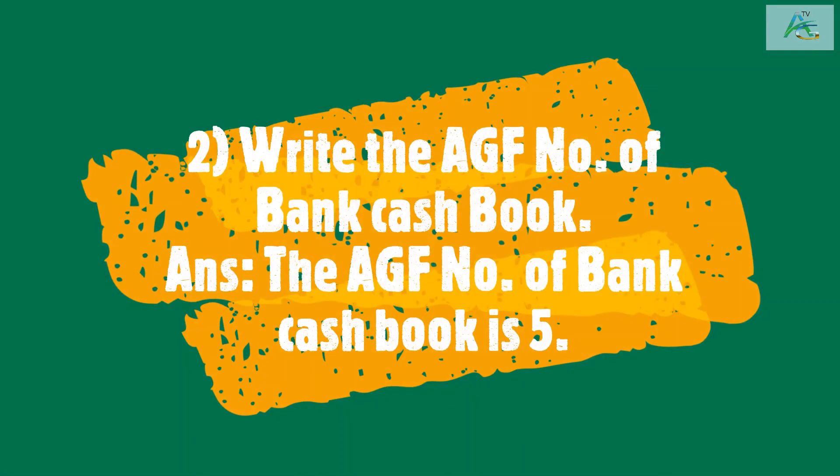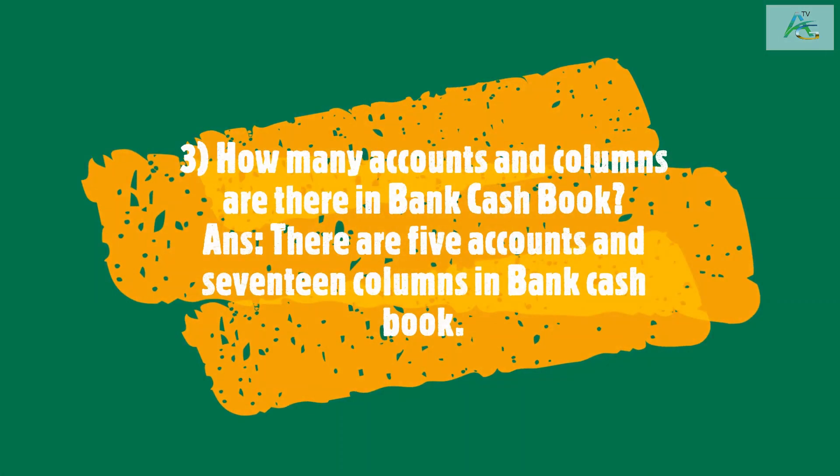Write the AGF number of Bank Cash Book. The AGF number of Bank Cash Book is 5. How many accounts and columns are there in Bank Cash Book? There are 5 accounts and 17 columns in Bank Cash Book.